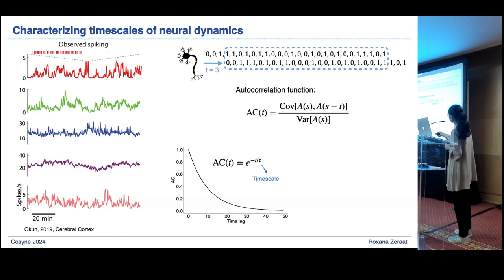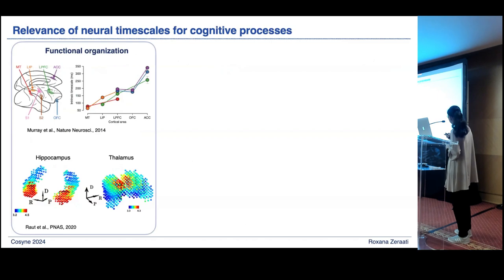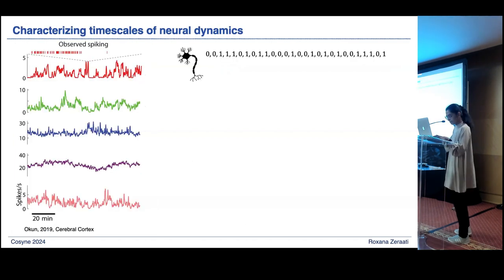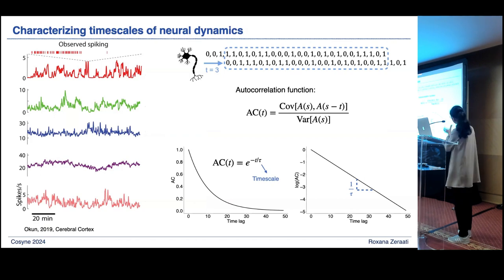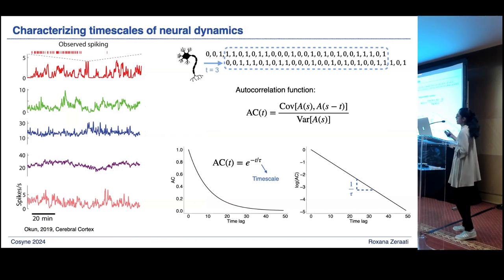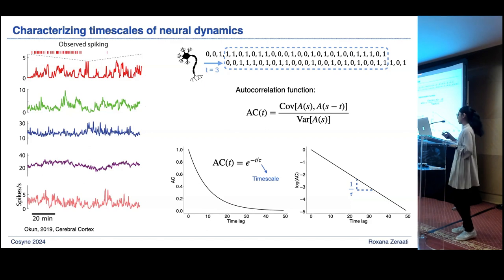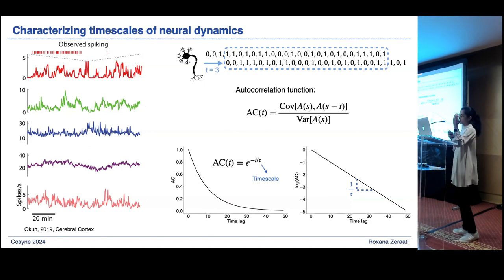Instead of plotting these autocorrelations in linear-linear coordinates, we can plot them in logarithmic-linear coordinates, where the slope of the line gives us the timescale. This representation is very useful if we want to study multiple timescales in the dynamics. If we have multiple timescales, we would have lines with different slopes, each corresponding to one individual timescale.